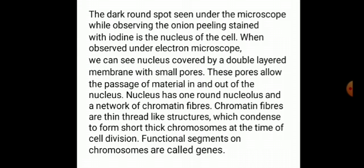In every cell there are a specific number of chromosomes. In humans, the number of chromosomes is 46: 22 pairs are autosomes and one pair is the sex chromosome. Chromosomes contain genes, which are the carriers of hereditary characteristics. Hereditary characteristics are carried from parents to offspring — for example, if parents are tall, their children will also become tall. Hereditary characteristics are transferred through genes, and functional segments on chromosomes are called genes.